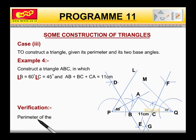Perimeter of the triangle ABC is equal to AB plus BC plus CA which is equal to 3 plus 4.5 plus 3.5 which is equal to 11 centimeters.